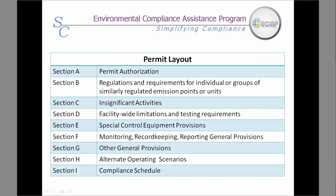I will soon break down the components of Section B. Section C contains the insignificant activities, which your facility may or may not have. Section D covers facility-wide emission limits and potential testing requirements — for facilities that have source-wide limits, this section specifies those limits and how to comply. Section E lists any special control provisions. Section F covers the monitoring, record keeping, and reporting provisions.